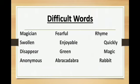Now here are some difficult words — learn them with spellings. Repeat after me: Magician (M-A-G-I-C-I-A-N), Swollen, Disappear, Anonymous (A-N-O-N-Y-M-O-U-S), Fearful, Enjoyable (E-N-J-O-Y-A-B-L-E), Green (G-R-E-E-N), Abracadabra (A-B-R-A-C-A-D-A-B-R-A), Rhyme (R-H-Y-M-E), Quickly (Q-U-I-C-K-L-Y), Magic (M-A-G-I-C), Rabbit (R-A-B-B-I-T).